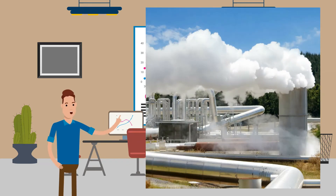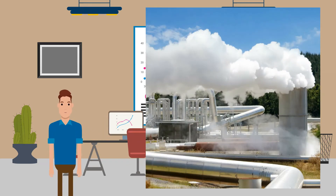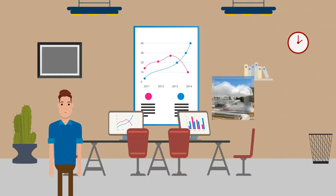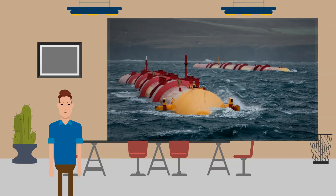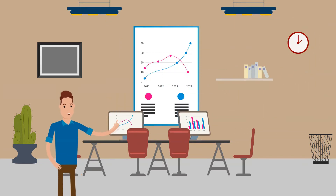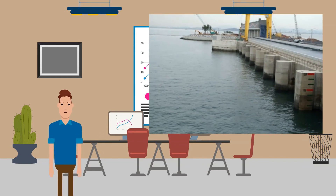Geothermal power is feasible where there are hot rocks caused by volcanic activity close to the surface. Wave power has great potential on the UK's stormy western coastlines, and small wave machines are already working well in Norway. Tidal power: the UK has a large tidal range which could produce huge amounts of electricity from barrages across estuaries, though disadvantages include high capital costs.